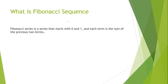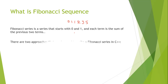Let's understand this through an example. We have two terms: 0 and 1. The next term is the sum of these two, 0 plus 1 equals 1. The next term is 1 plus 1 equals 2. Then 1 plus 2 equals 3. Then 2 plus 3 equals 5, and so on. This process continues till the end terms.